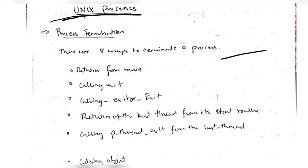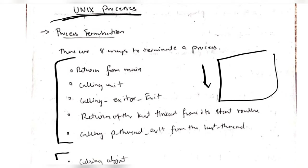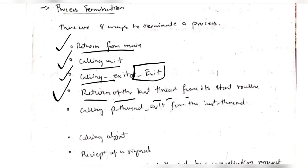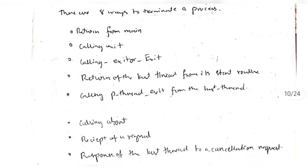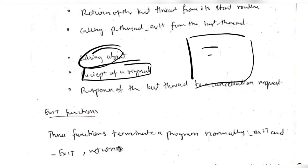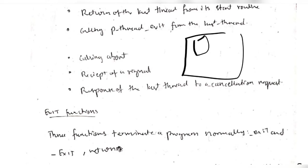Next we have the Unix process. A process is a method of performing a task, and there are eight types of termination. The first five are normal: return from a main function, calling the exit function, calling _exit or _Exit, return from the last thread's start routine, and calling pthread_exit from the last thread. The other three are exceptions: calling abort, receipt of a signal - when a program receives a CPU signal to abort while processing - and response from the last thread to a cancellation request.